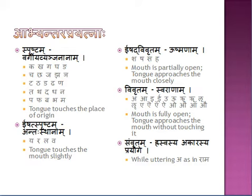Ishad vivrata means slightly open — in vivrata the mouth is fully open, whereas in ishad vivrata the opening is less; the tongue approaches the mouth part more closely. Ishad vivrata prayatna is for the ushma letters: S, Sh, Sh, S, and H — these four letters are called ishad vivrata.